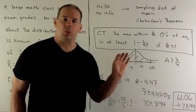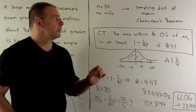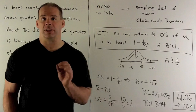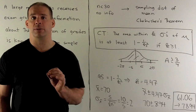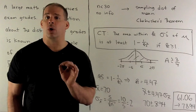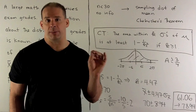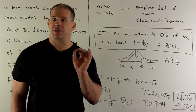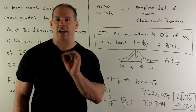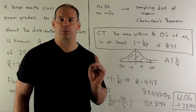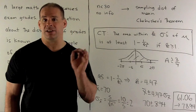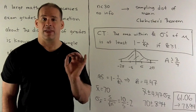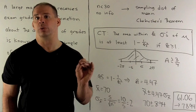Now, the case we want here, we have n less than 30 and no information about the population distribution. So our only hope is to pull out Chebyshev's theorem. Chebyshev's theorem applies to any probability distribution where you can compute the mean and the standard deviation, though the results that come out are going to be kind of crude.